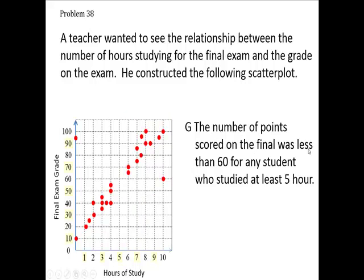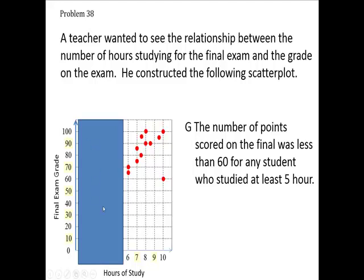The number of points scored on the final was less than 60 for any student who studied at least five hours. So we're not going to look at any of these over here — block them out. Look at the ones who studied six through ten hours. Did everybody score less than 60? That didn't make any sense — this student scored 100. I only have one who scored 60, so everybody looks like they passed. You can't say they all got less than 60, so forget this sentence.